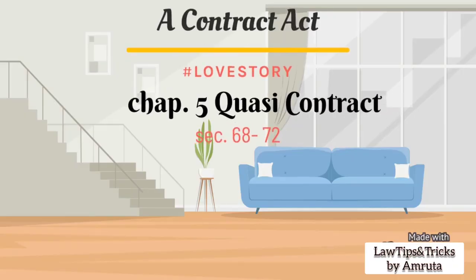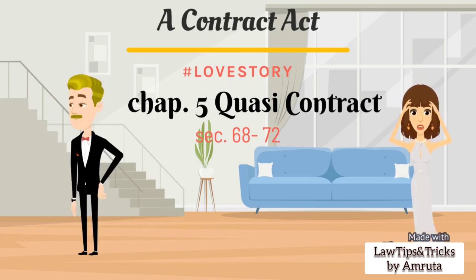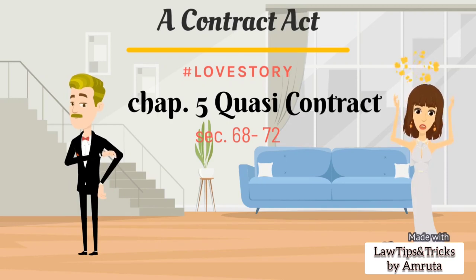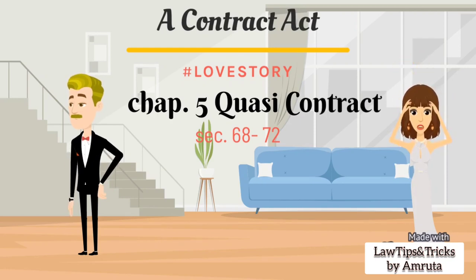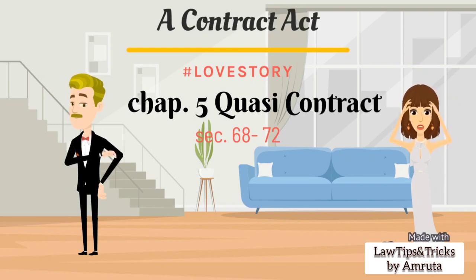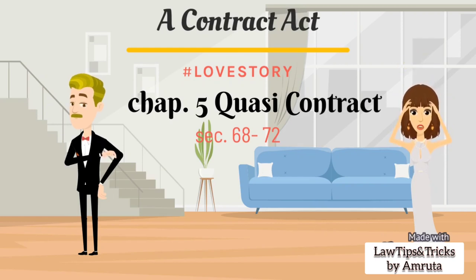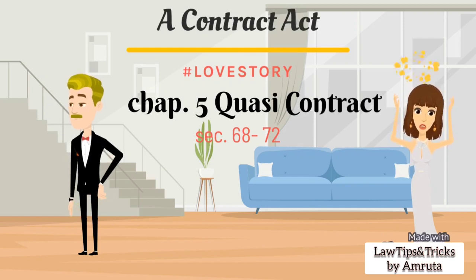Now Chapter 5: Quasi Contract, from section 68 to 72. What does Quasi mean? Quasi means pseudo — it is not a real contract. It refers to things and actions which are not exactly or fully what they might appear, but are treated as if they are. So in their love story, things are not happening according to their conditions — their love is not satisfied. They start hating each other. It will be a Quasi Contract.